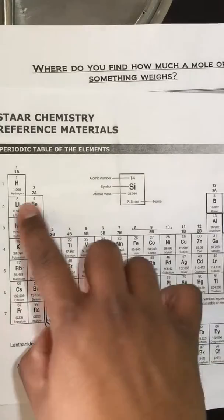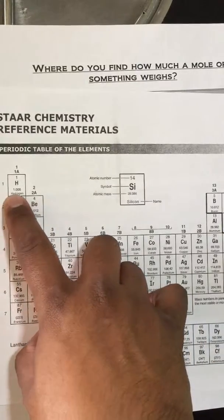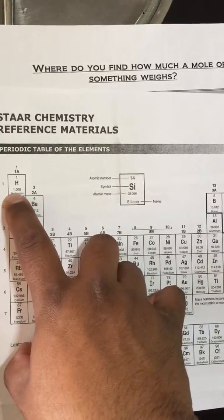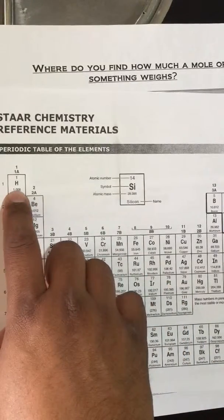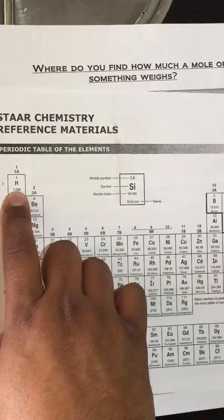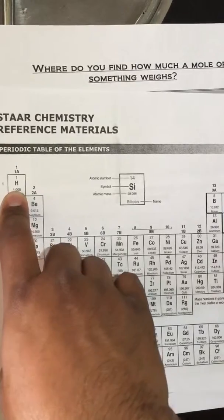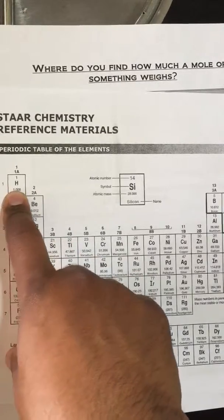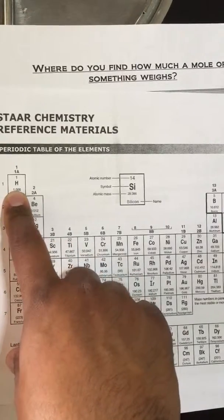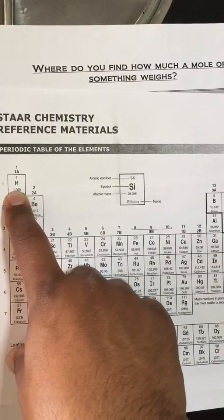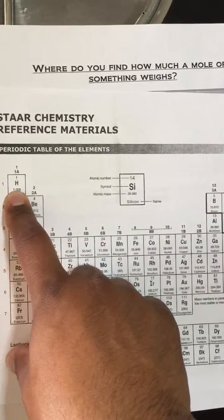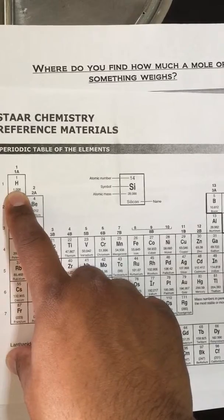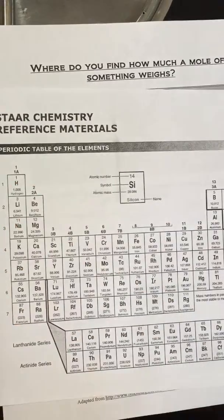Remember, one mole of hydrogen is equal to one gram of hydrogen. If I have five moles of hydrogen, how many grams of hydrogen do I have? Five grams. Very good.